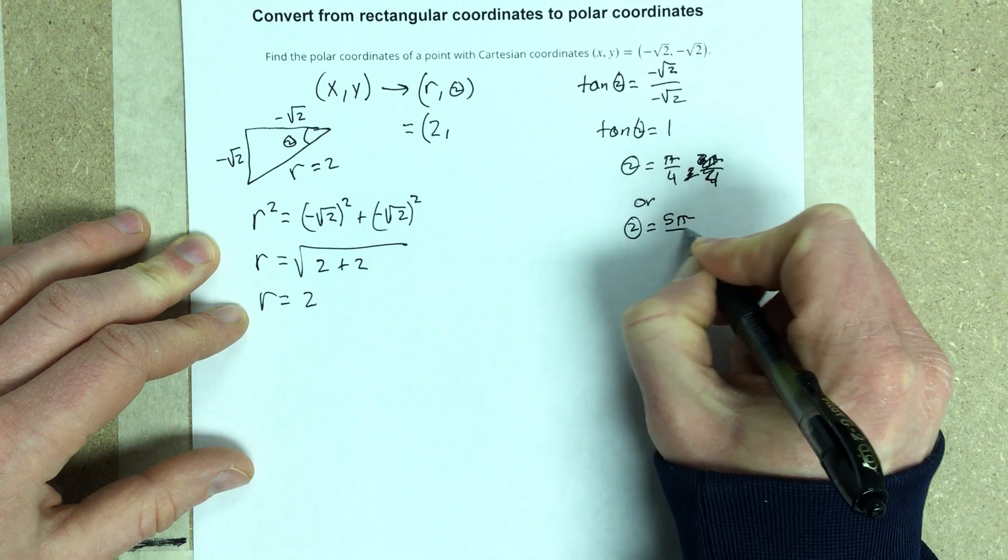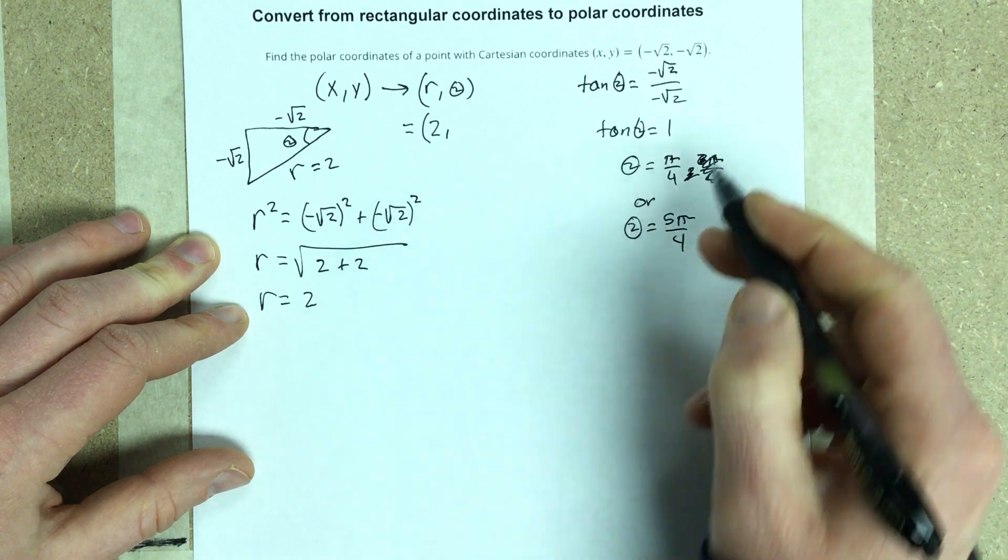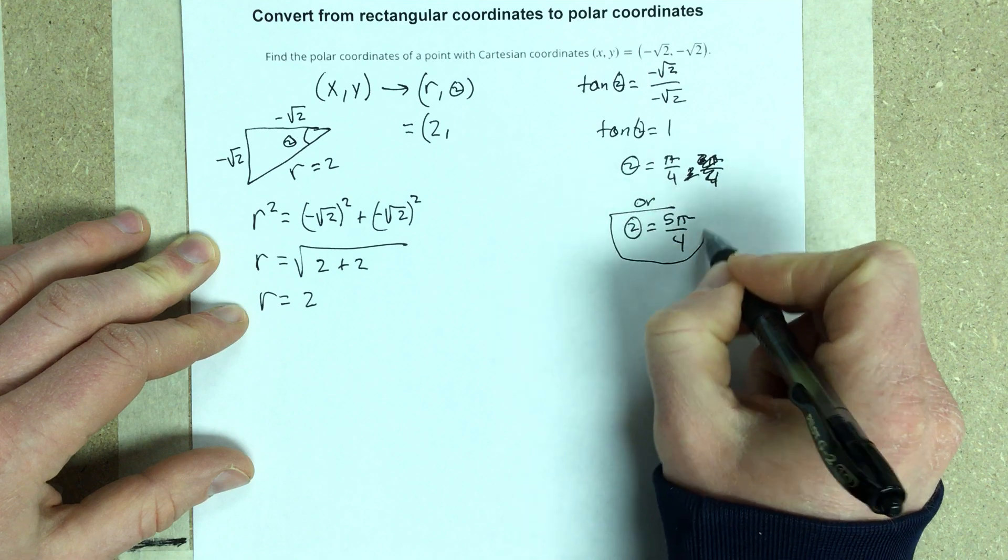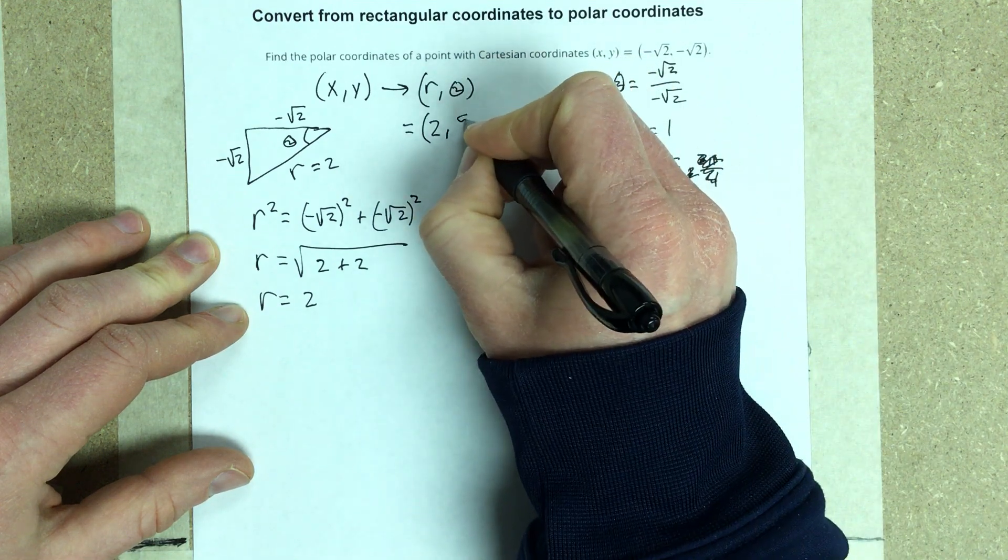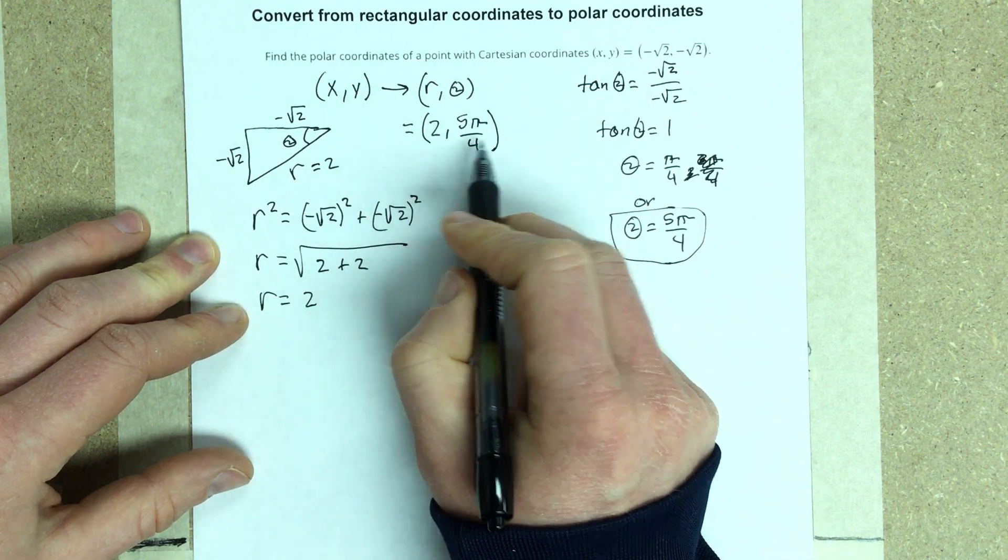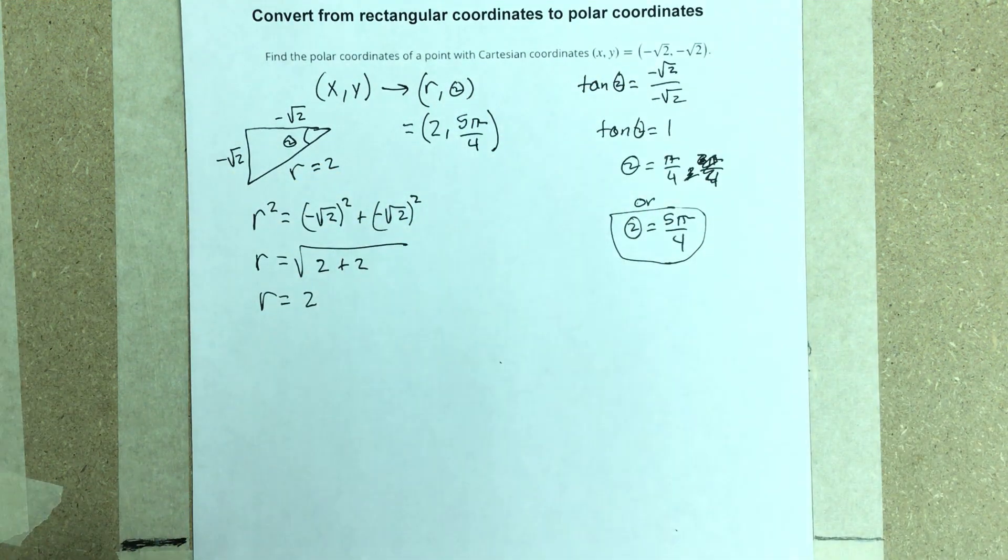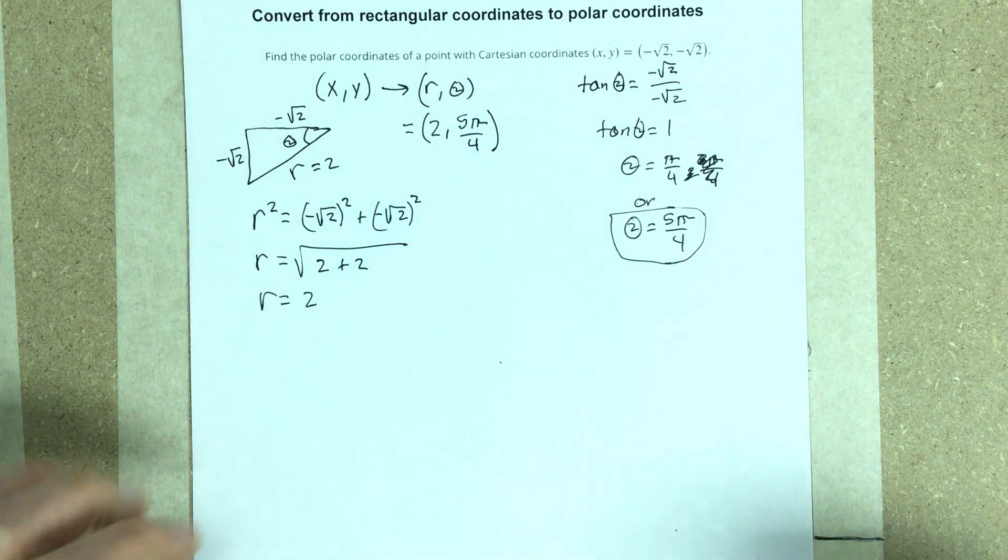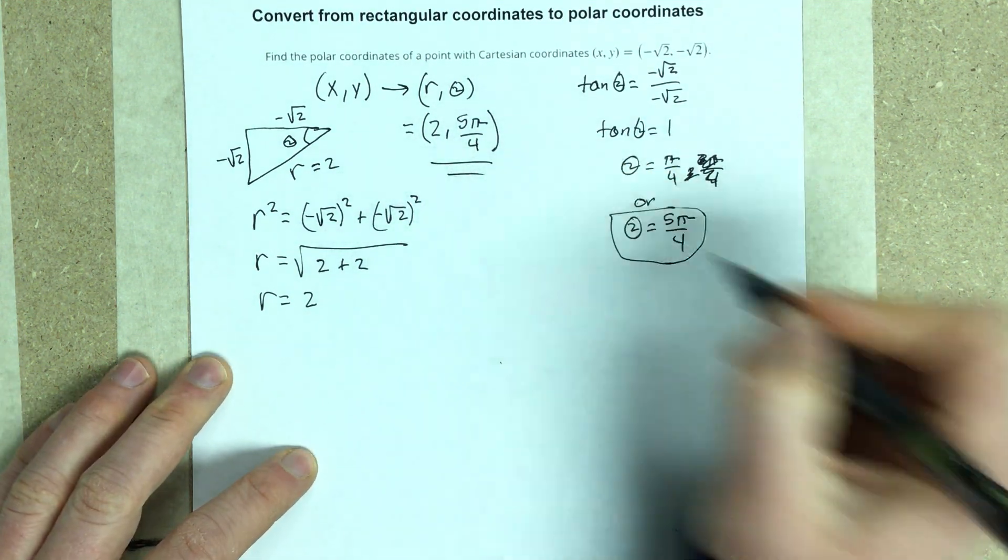Now 5 pi over 4 is in the third quadrant. I need this thing to be in the third quadrant. So I'm going to have to use the 5 pi over 4 part for theta because my triangle is in the third quadrant. So I have 2 comma 5 pi over 4 for our polar coordinate.